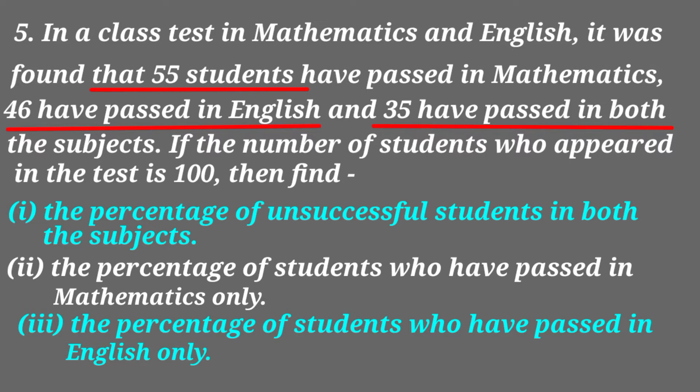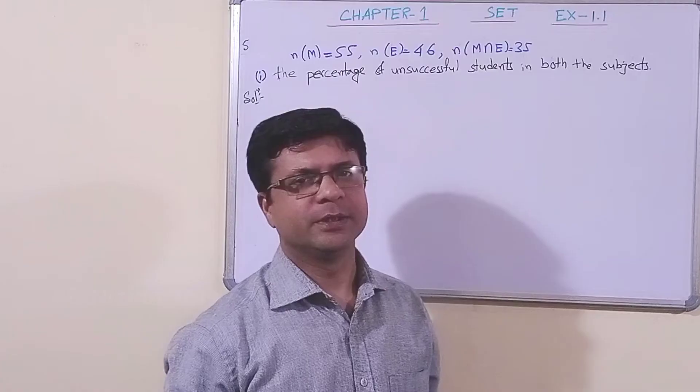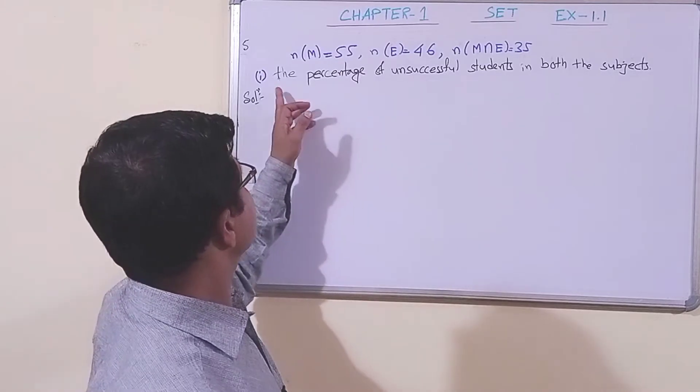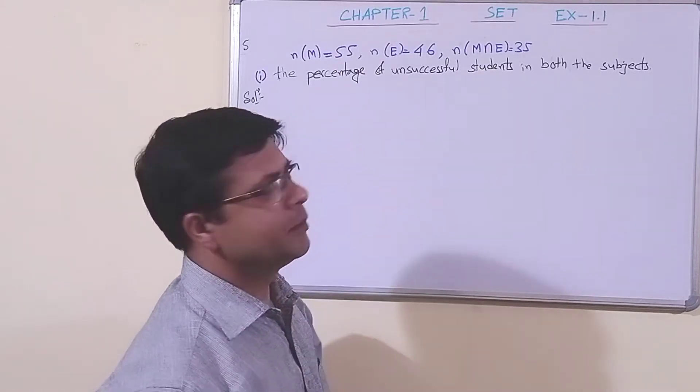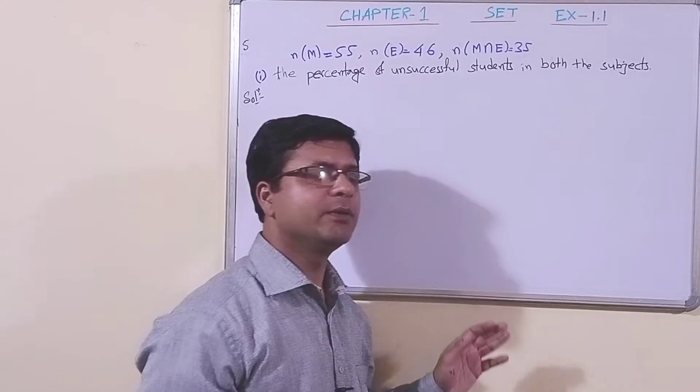This is the set of students who have passed in both subjects, that is, in mathematics and in English. Dear students, now we have to find part (i): the percentage of unsuccessful students in both subjects. Before attempting, what will we do?